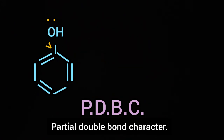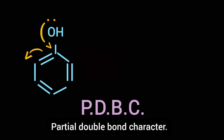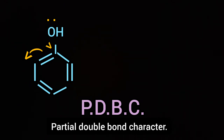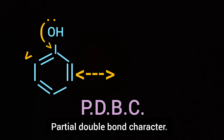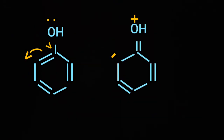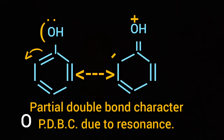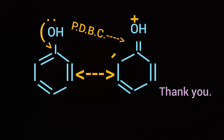With the benzene ring, there is partial double bond character between C and O. Because of this partial double bond, it needs more energy to break. So phenol does not give chlorobenzene by treating with Lucas agent.